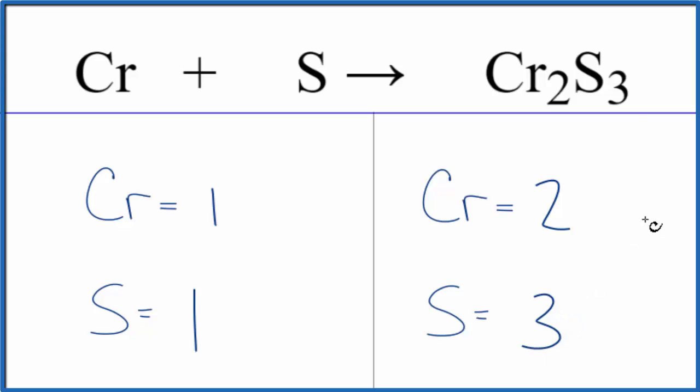And this one's actually pretty easy to balance because the sulfur is by itself and the chromium's by itself, so we can change the coefficients. That won't change anything else. So we could put a two in front of the chromium.